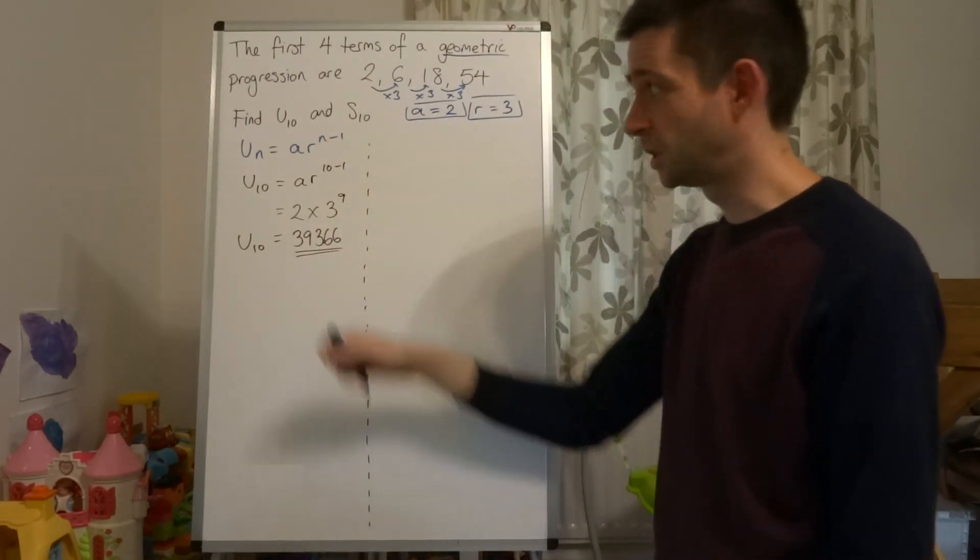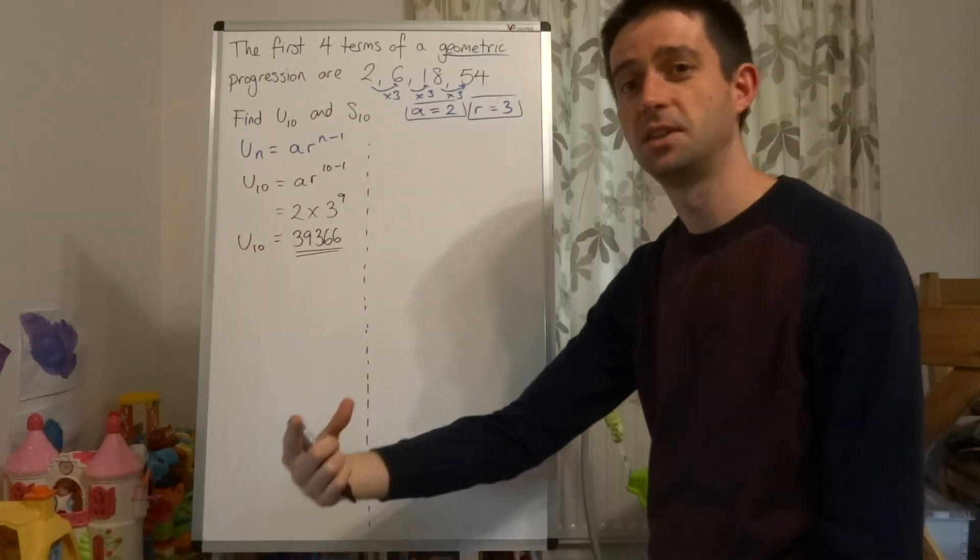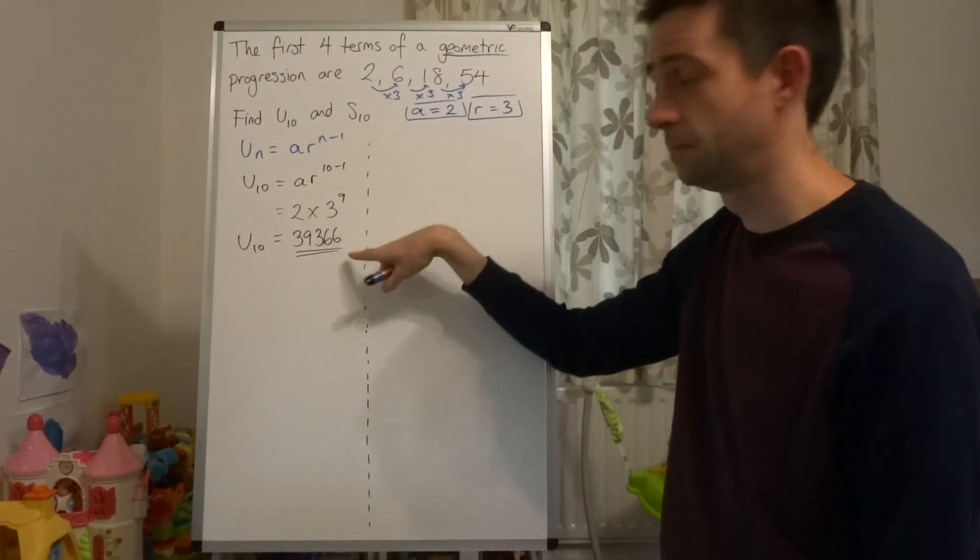This should make sense because we start on 2, multiply by 3 nine times to get to the tenth term. And that's what this formula is telling us to do.